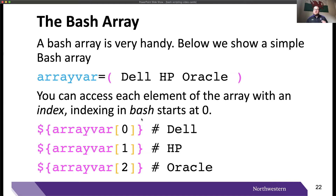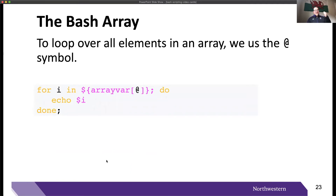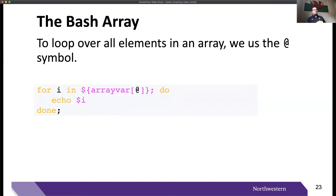To loop over each element in an array, we make use of the at symbol. You can see the same syntax with dollar sign curly brackets, and the at sign is saying we don't know how many elements there are in this array, but loop over all of them.